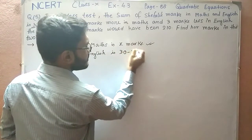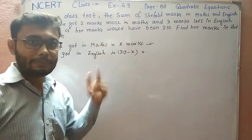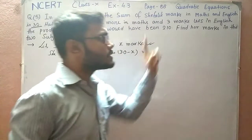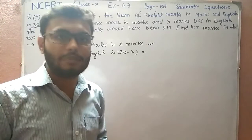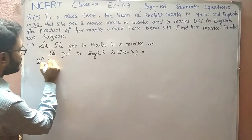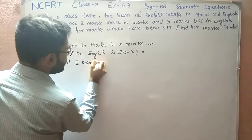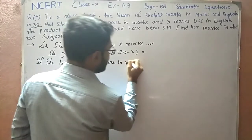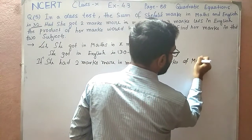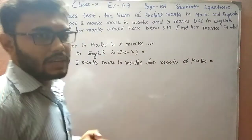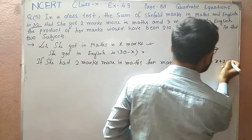The next line says: had she got two marks more in Maths and three marks less in English. We have to find the marks under those conditions. If she had got two marks more in Maths, then the marks of Maths — it was x previously, now she is getting two marks more — so it would be x plus 2.